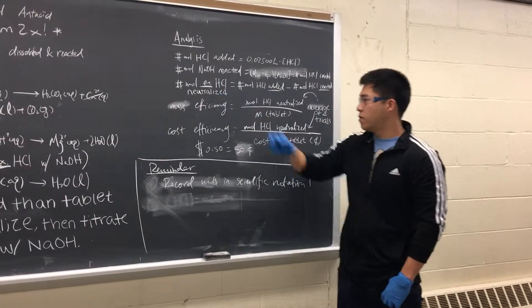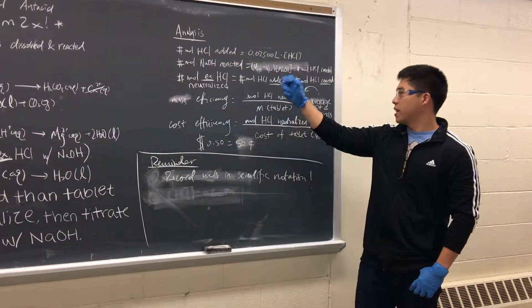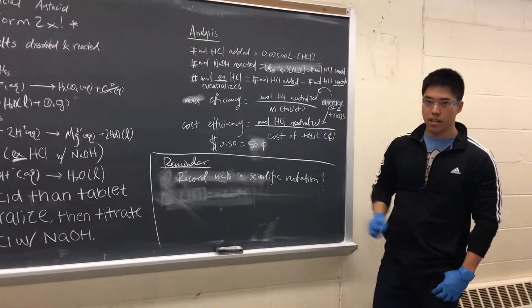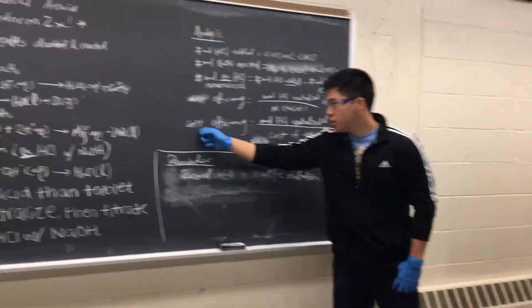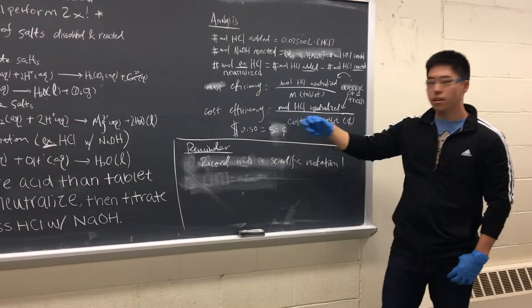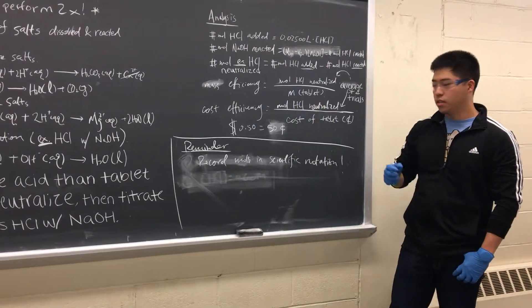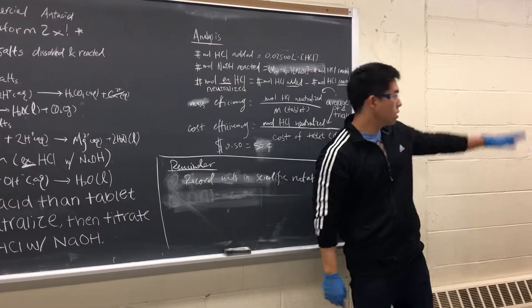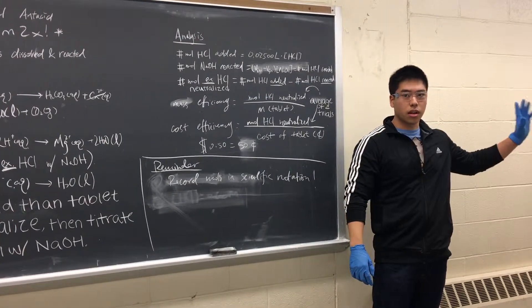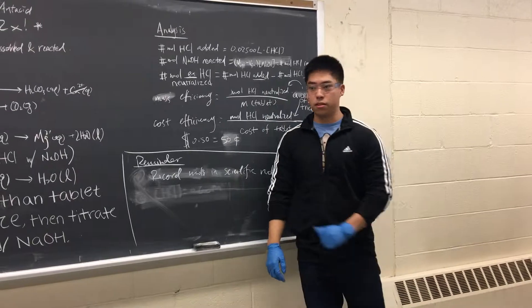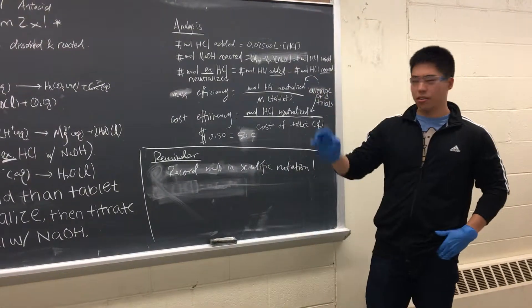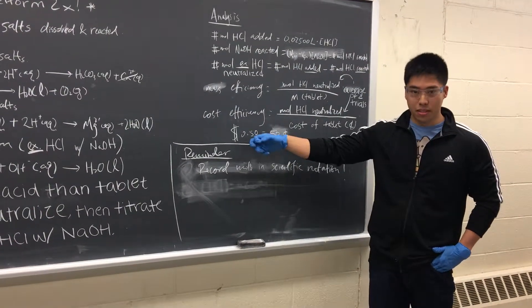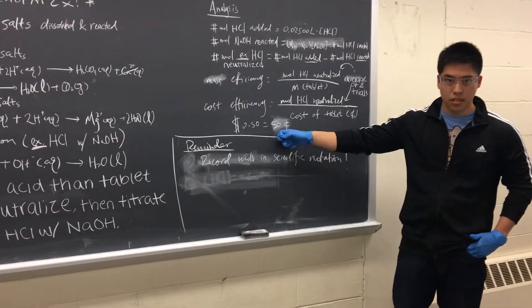Once you get that average, find the mass efficiency — that's your average moles of HCl neutralized divided by the mass of the tablet. Then find the cost efficiency, which is the average moles of HCl neutralized divided by the cost of the tablet. Based on the number on your tablet, there's a chart that gives you the cost. Just to clarify: if you see something like $0.50, that means 50 cents.